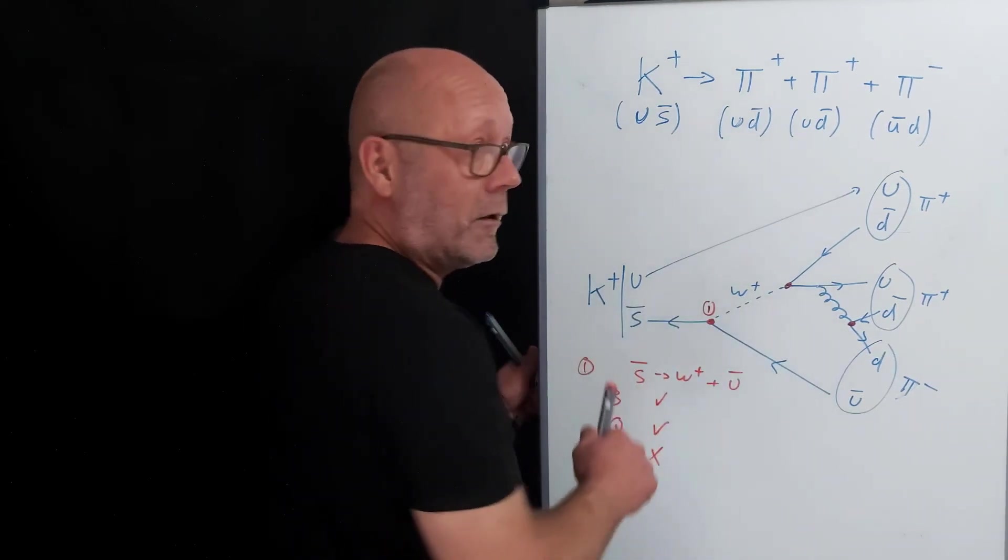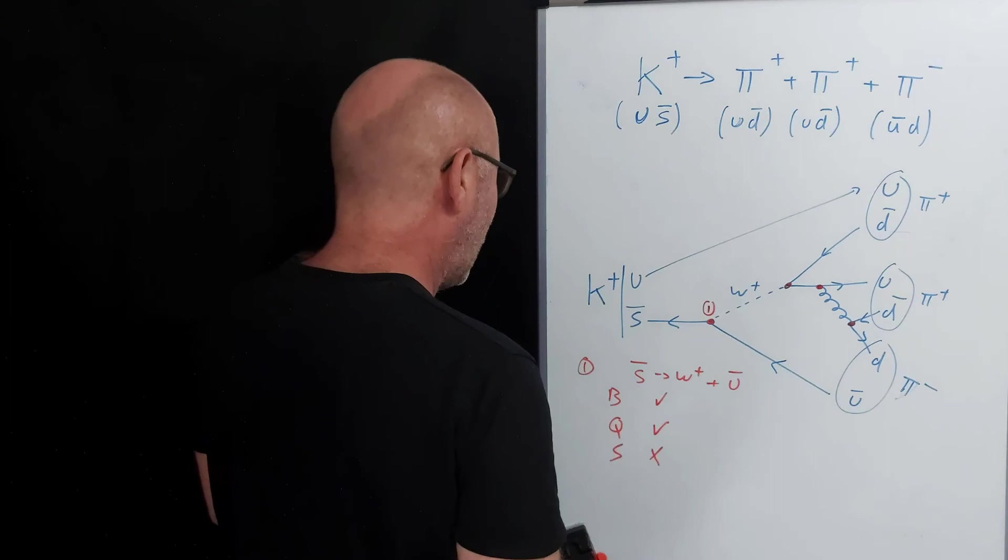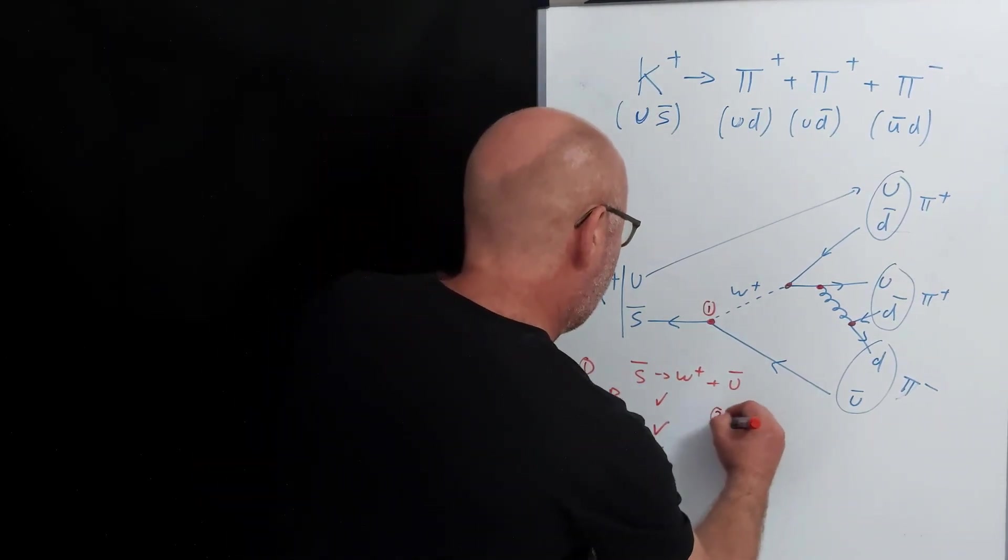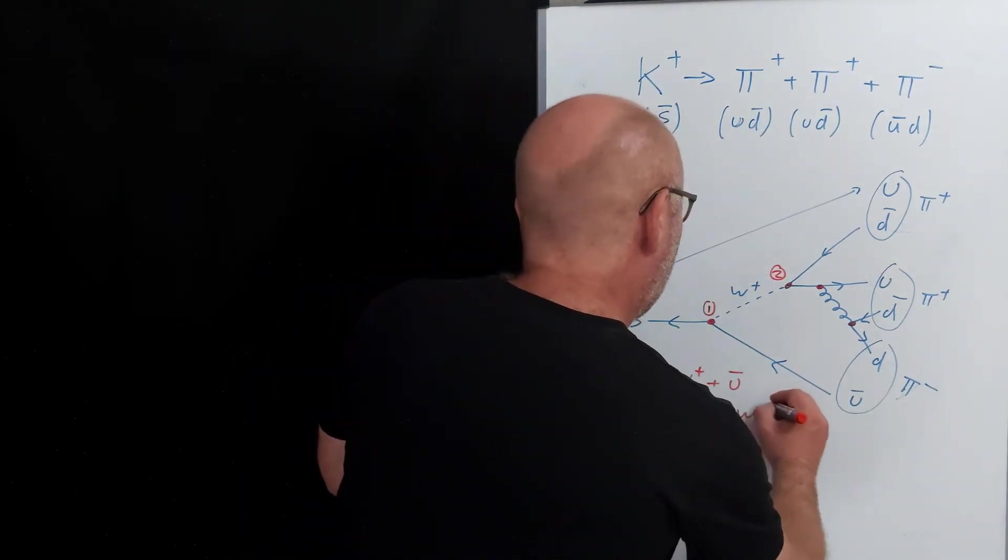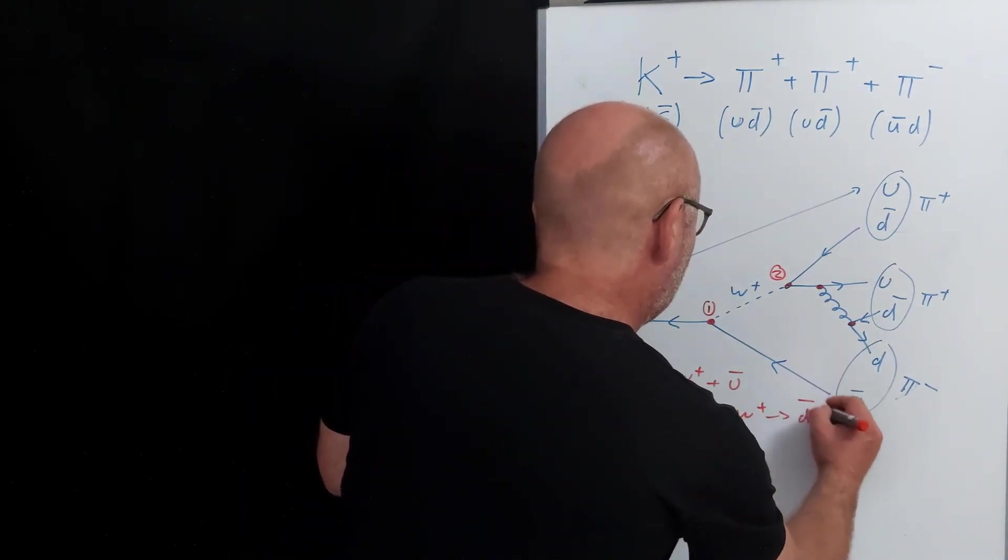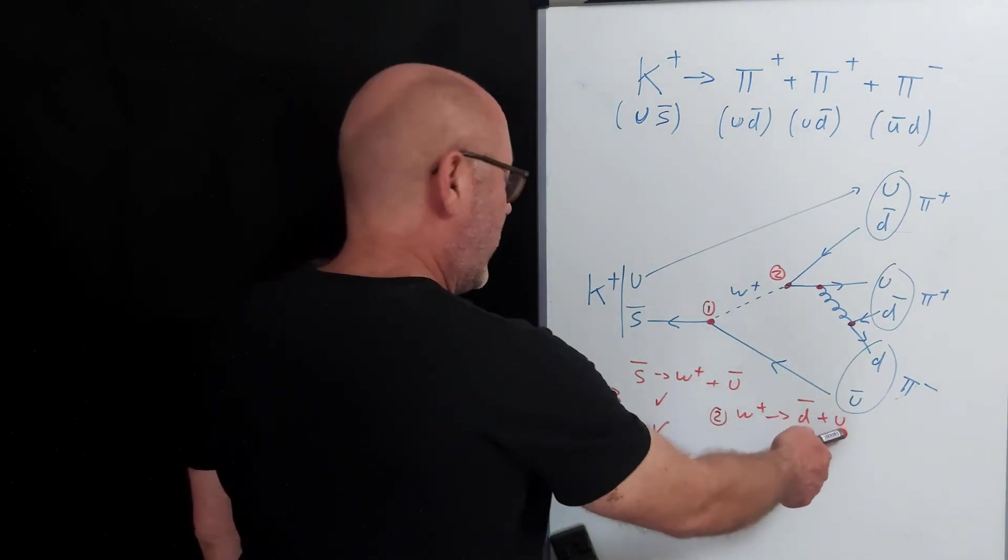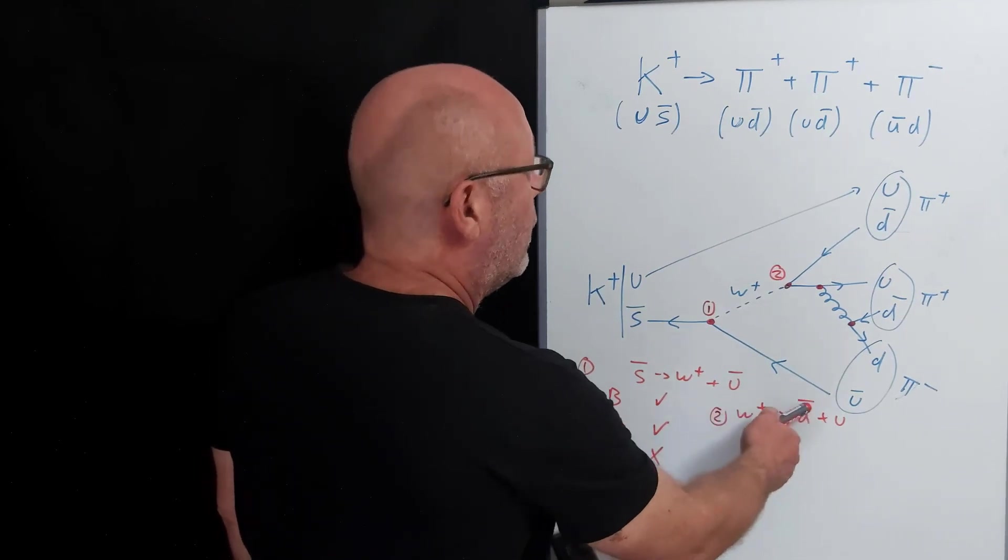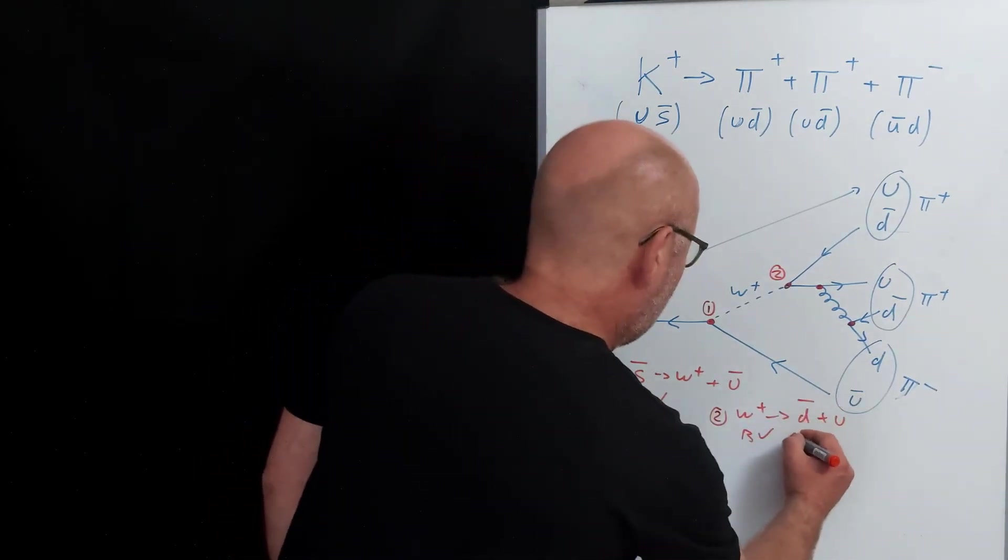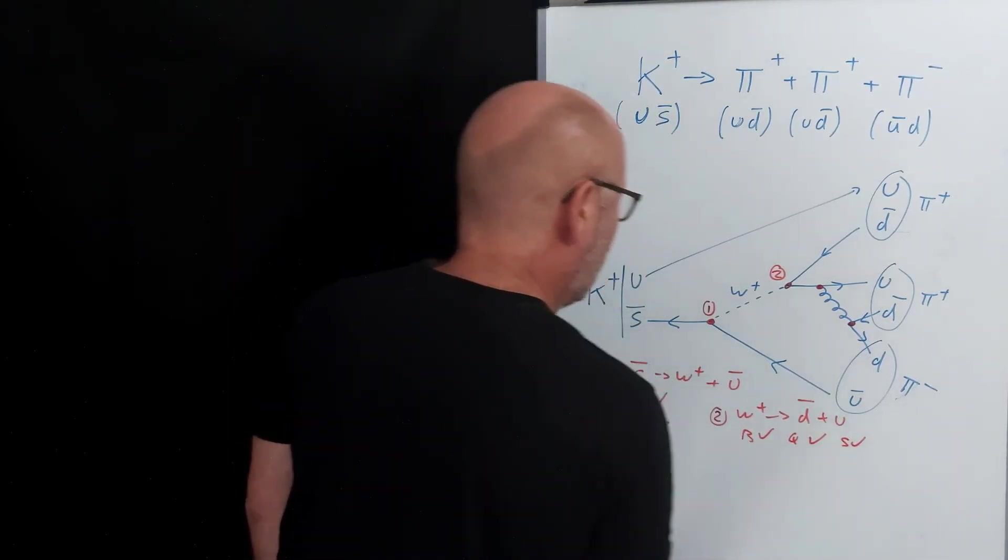Oh, there's a vertex here too. Okay, so I've got W plus giving me an anti-down plus an up. Baryon number, minus one-third plus one-third, so B is okay. Charge, plus one, plus one-third, plus two-thirds, charge okay. Strangeness, zero everywhere, okay, and there's no lepton number.